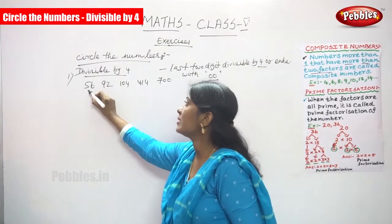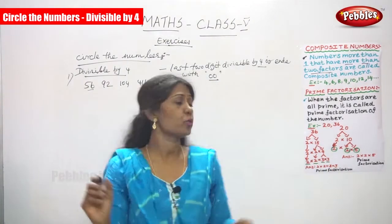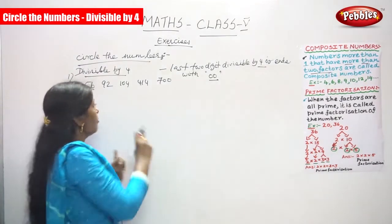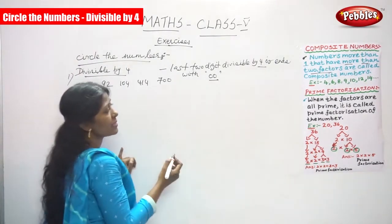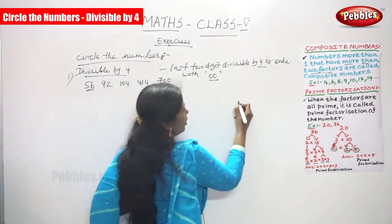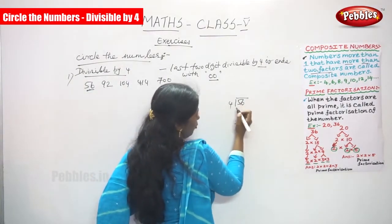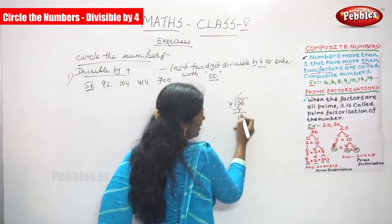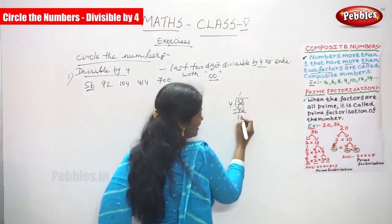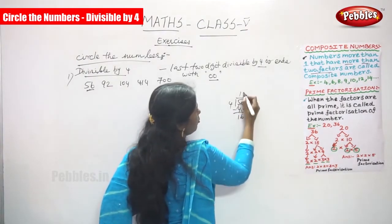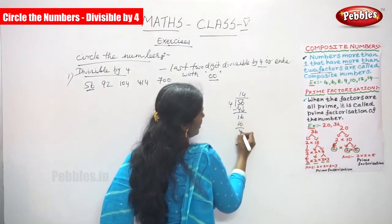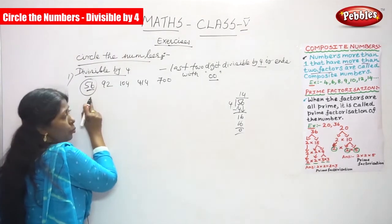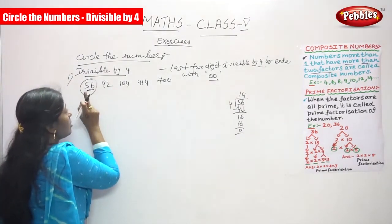Look at the number 56. What is the last two digit? That is 56 — they have given only two digits, so 56 itself is the last two digits. Whether 56 is divisible by 4 or not: 56 divided by 4 — 1 four is 4, 5 minus 4 gives 1, bring down the next digit 6, 4 fours are 16, remainder is 0. So 56, the last two digits are divisible by 4, and this number is divisible by 4.